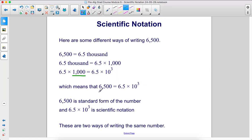Therefore, 6,500 can be written as 6.5 times 10 to the 3rd. 6,500 is the standard form, while 6.5 times 10 to the 3rd is scientific notation. So these are two ways of writing the same number.